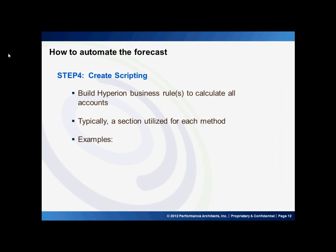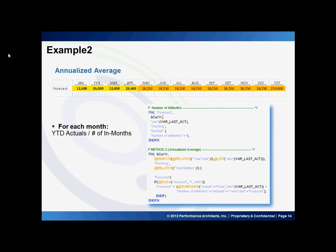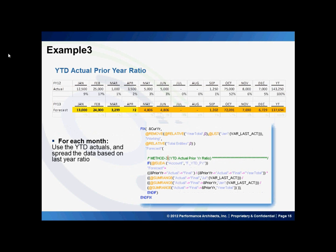Step 4 is to create the scripting. This may sometimes be easier said than done, depending on the complexity of the method. In this example, the Hyperion CalcScript syntax is setting the forecast equal to the budget. The script first fixes on the out months for all departments and then sets the forecast equal to the budget for all accounts that have a UDA assignment of FBGG. This next script example puts the average dollars from the existing actual data into each out month — it derives the number of out months and then uses that as a divisor into the total amount of existing actual data. A third example gets more complex, where the out months of the forecast are being set to a ratio of last year's dollars against last year's year total.